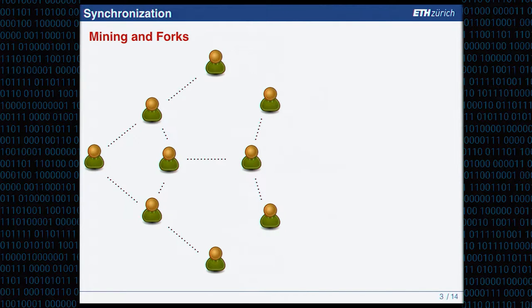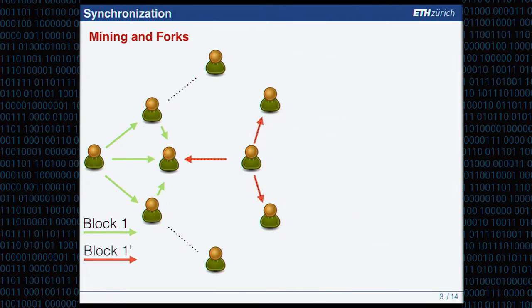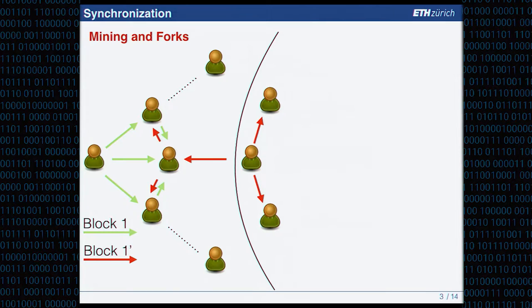If one of these miners finds a block, he propagates this block to his peers and those continue propagating it. While this propagation happens, it could be that there is another miner which actually finds a competing block — one prime — which competes with the previously broadcasted block one. This creates a network partitioning, and there could be not only two but maybe three or N partitions, with several miners competing for one block.